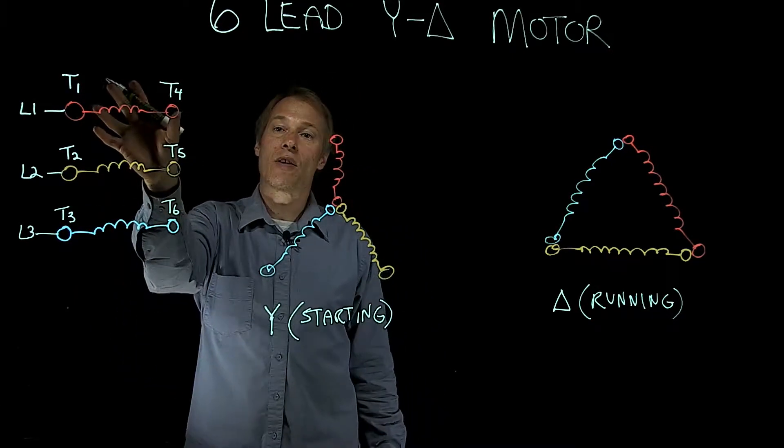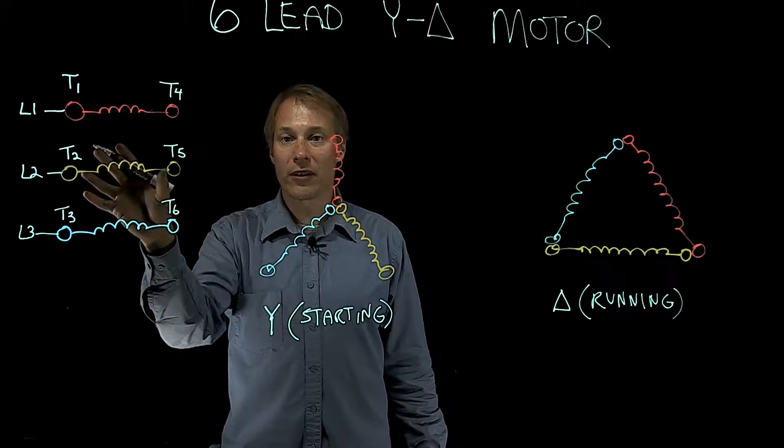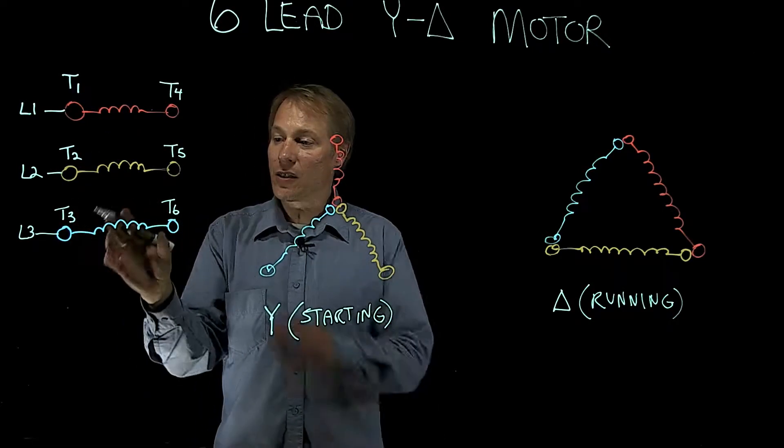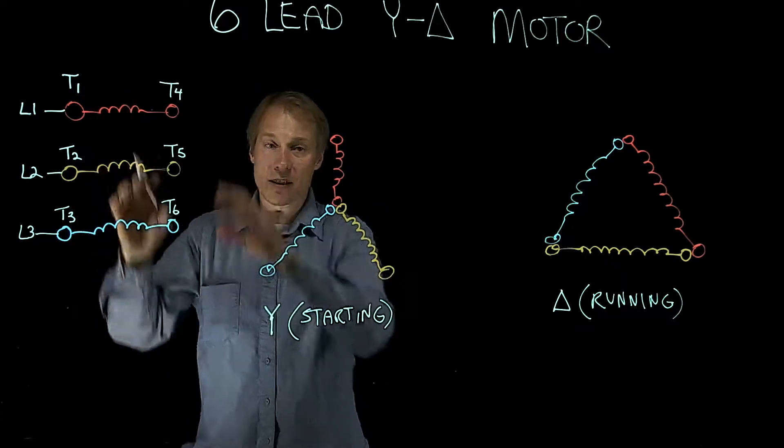So T1 and T4 are a pair, 2 and 5 are a pair, and 3 and 6 are a pair. So again, 3 and 6 are the same winding, and so on.